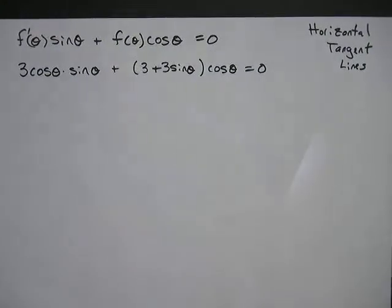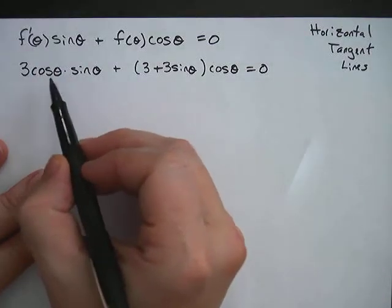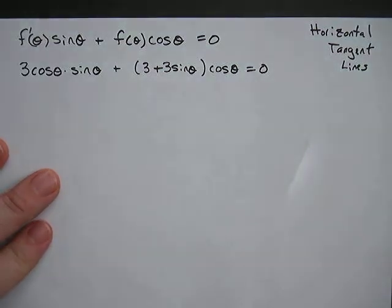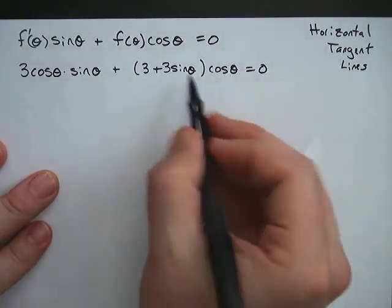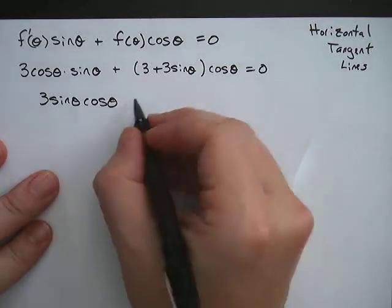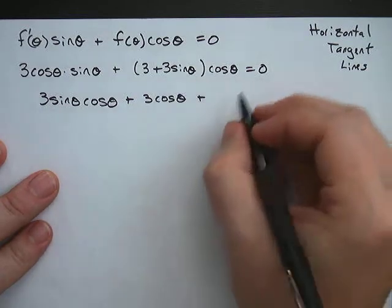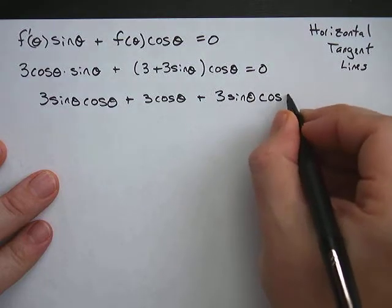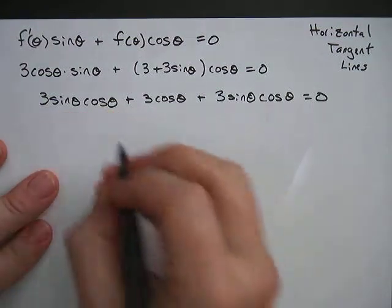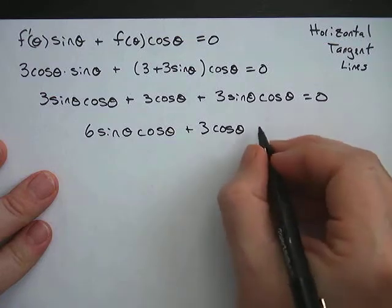Here's the numerator — we're going to set the numerator equal to 0. I've already put the information in: f′(θ) was 3 cosine, sine was part of the formula, f(θ) was the original r = 3 plus 3 sine theta, and cosine was part of the formula. To solve this, we work it out and factor. So I'm going to write this as 3 sine theta cosine theta, plus distributing, 3 cosine theta, plus 3 sine theta cosine theta equals 0.